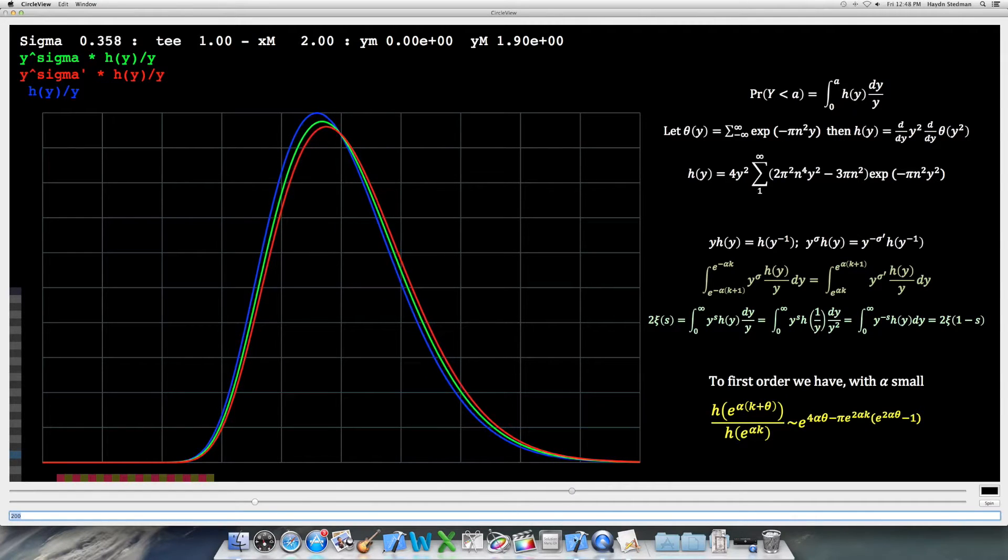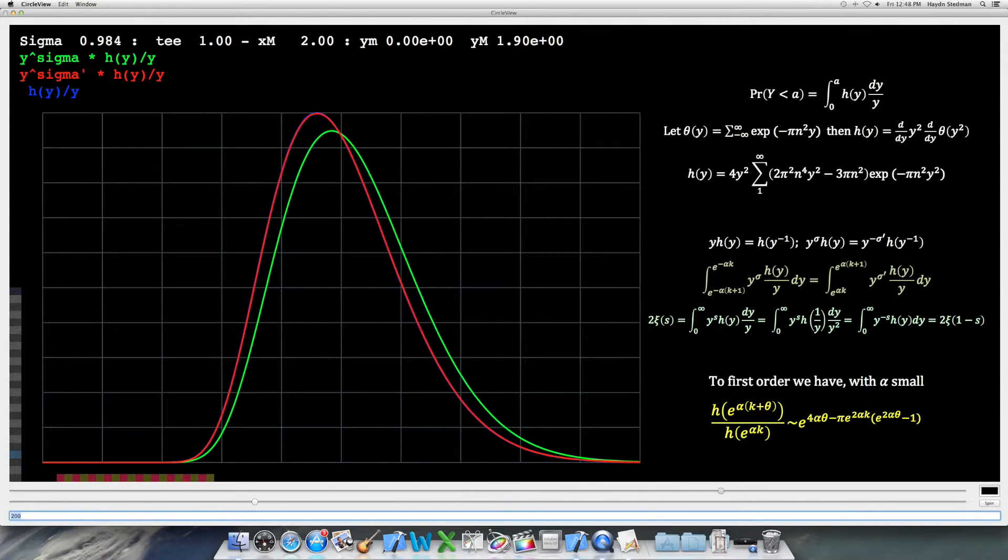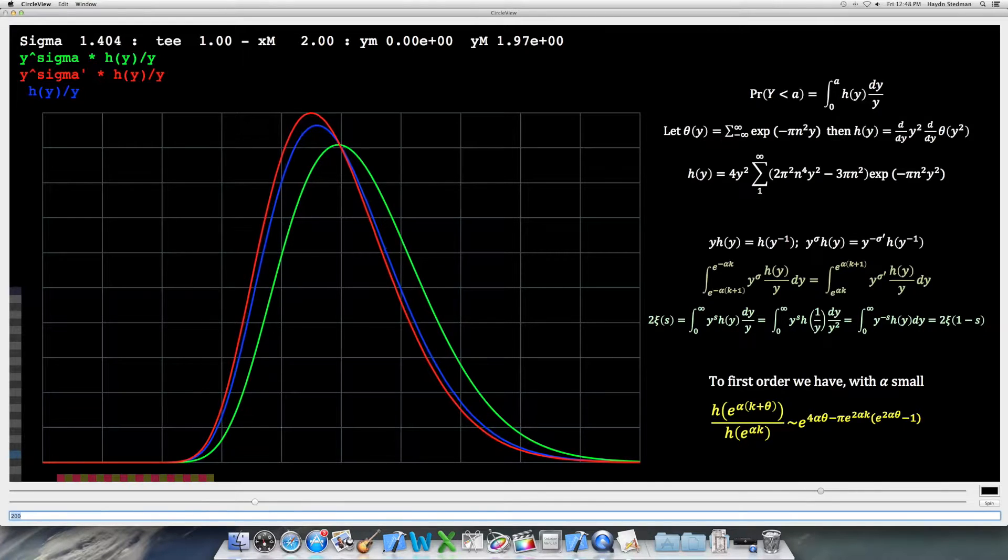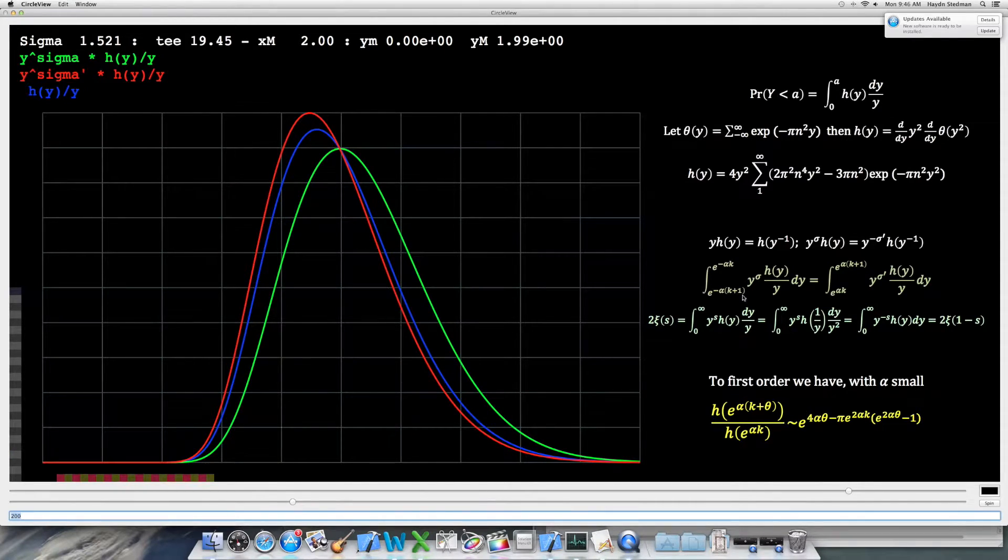The functional equation which gives us the symmetry rule around 1 for the relevant integrals. The functional equation of Xi itself, a simple substitution in the integral. And a delightful first order approximation which is very useful and instructive.